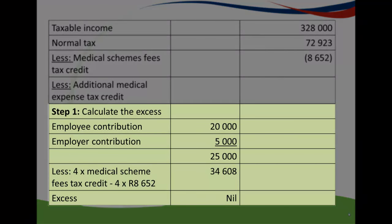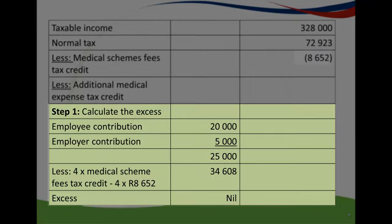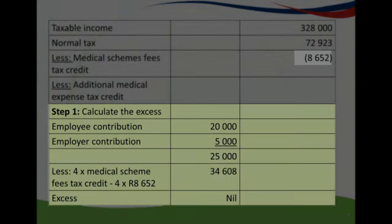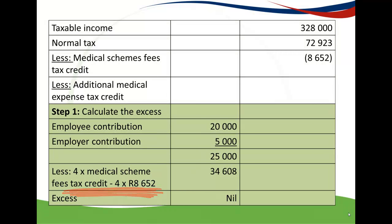For Rose: her contribution ($20,000) plus her employer's contribution ($5,000) equals $25,000. From that, deduct four times her MSFTC: 4 × $8,652 = $34,608. This gives a negative amount, so Rose's excess contributions are zero — because an excess must always be positive.